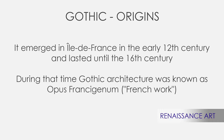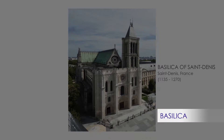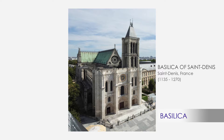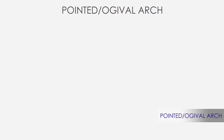Why that? Well, because this new style broke most of the classical rules in architecture, even if it was a Romanesque evolution. Already in the Basilica of Saint-Denis, the first example of Gothic architecture, we can easily understand how the main features were so innovative. And we need to start with the foundation: the pointed or ogival arch.